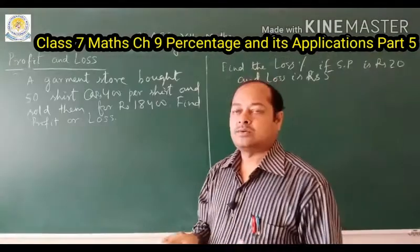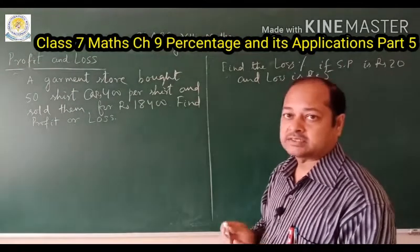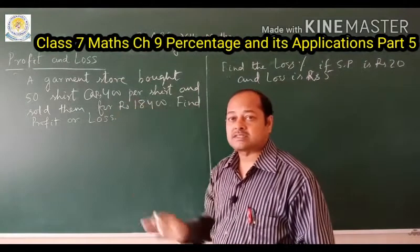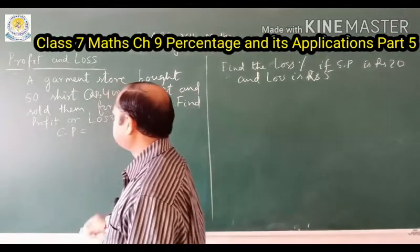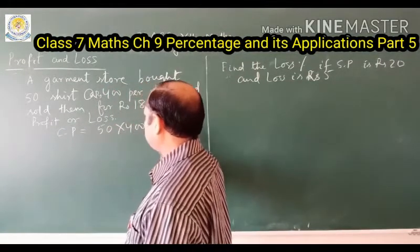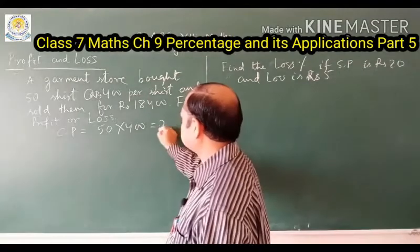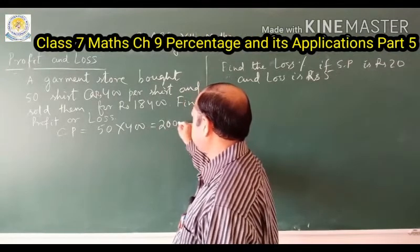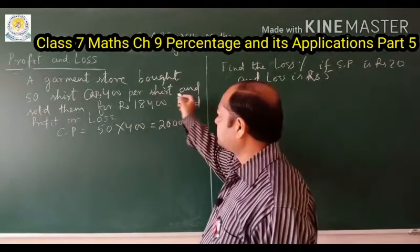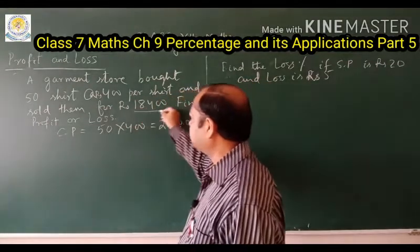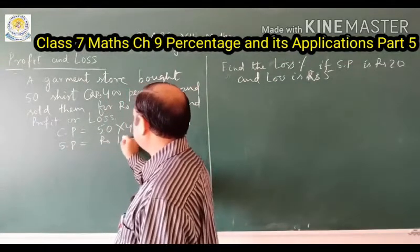Now look at this question. A garment store bought 50 shirts at 400 rupees per shirt. So one shirt costs 400 rupees and 50 shirts were bought. Cost Price = 50 × 400 = 20,000 rupees. The next part says they were sold for 18,400 rupees, so Selling Price = 18,400 rupees.